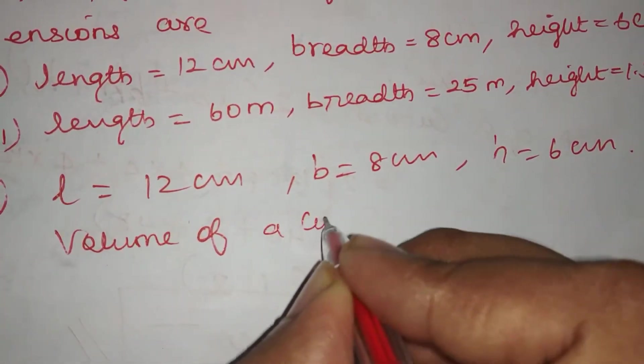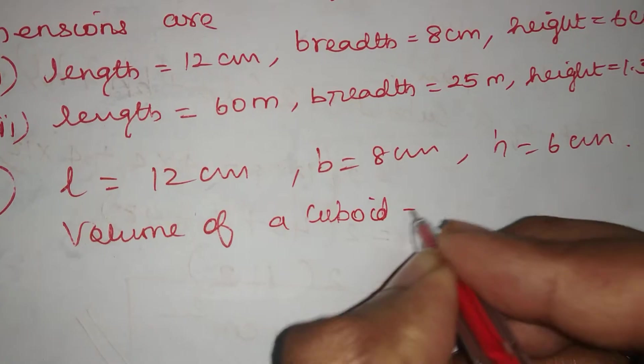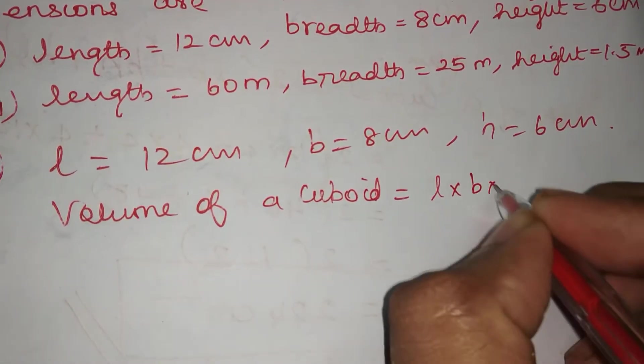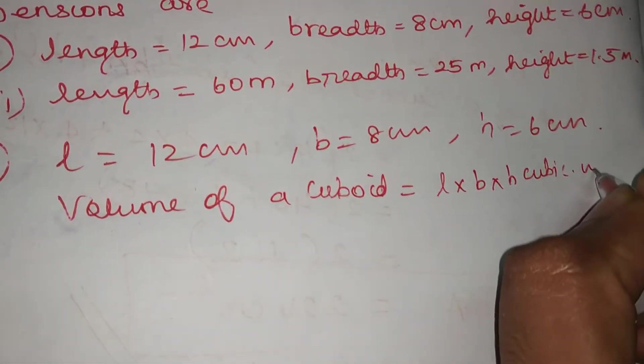Volume of a cuboid equals L into B into H cubic units.